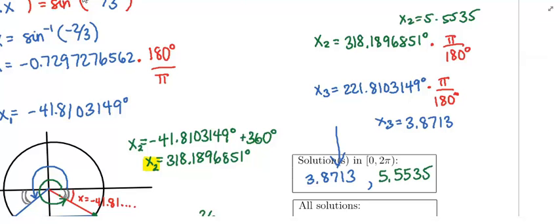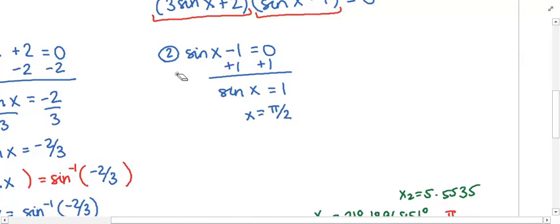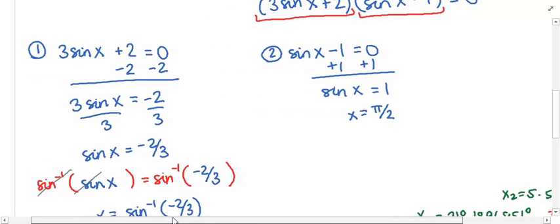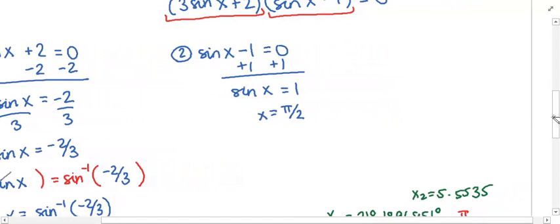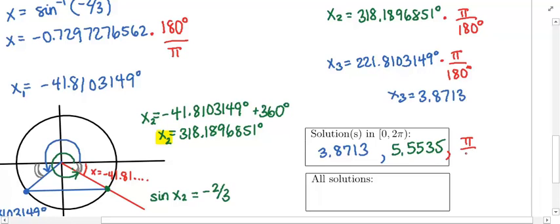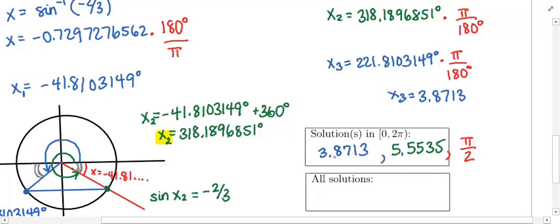So we have found all our angles. There was also a third solution from earlier: π/2. So there are three angles between 0 and 2π that solve our equation: π/2 (exact), approximately 3.8713 radians, and approximately 5.5535 radians. The other two angles cannot be expressed exactly, so we leave them as decimals rounded to four places after the decimal point.